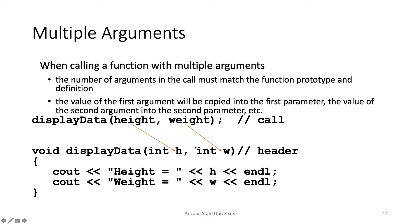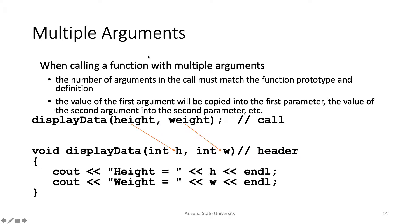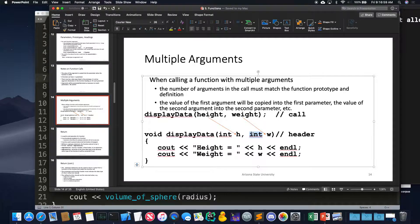If you have multiple arguments — say height and weight — they are separated by commas in the header and prototype. Can one be a double and one be an int? Yes — you can have any combination you want, like double then int or int then double. The order actually matters. Height and weight are continuous values, so they probably shouldn't be integers — doubles are better. But it depends on your use case; for example, you might always round height to the nearest integer.